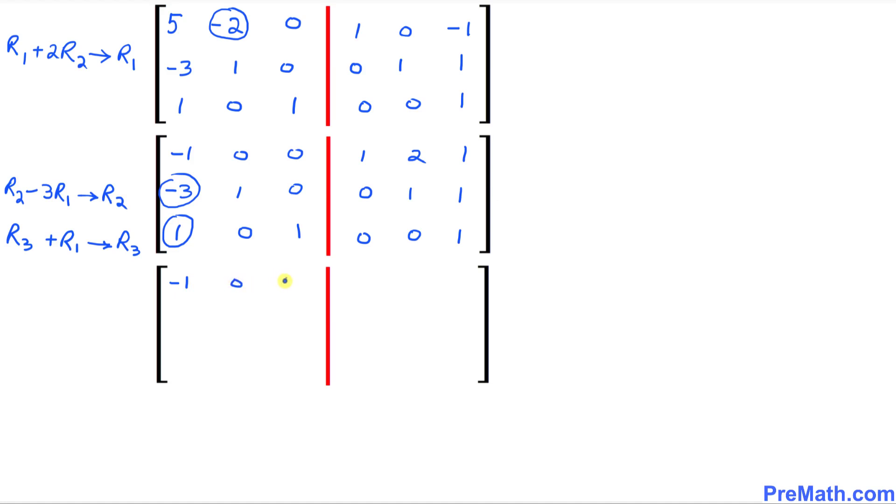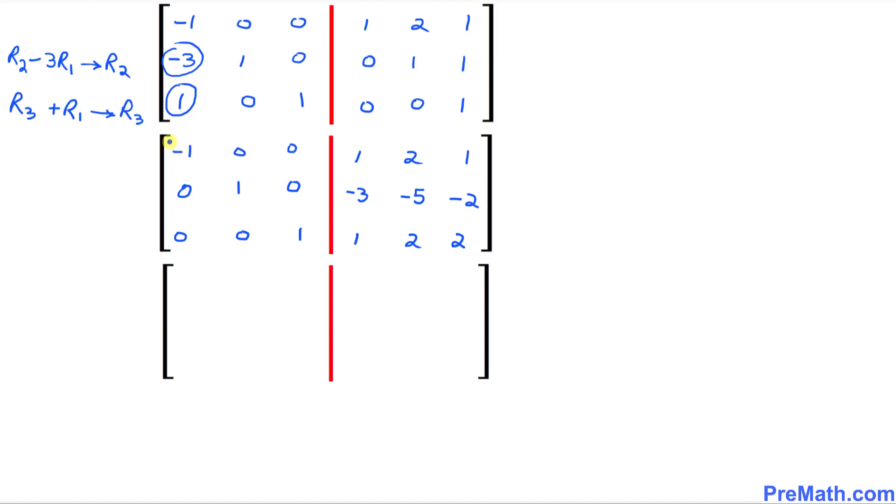The first top row is going to stay the same, negative 1 0 0 and this is 1 2 1. The second row is going to become 0 1 0 and here this is going to become negative 3 negative 5 negative 2. Finally in row number 3 we are going to get 0 0 1 and this side is going to become 1 2 2.